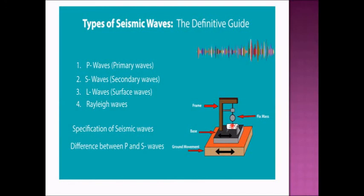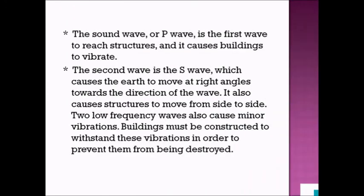We have P waves (primary waves), S waves (secondary waves), L waves (surface waves), and Rayleigh waves. The P wave is the first wave to reach a structure and causes buildings to vibrate — if you're living in a high-rise, you could already feel that there is an earthquake. The S wave causes the earth to move at right angles to the direction of the wave, causing structures to move from side to side.